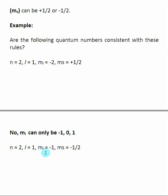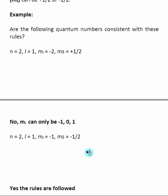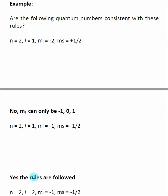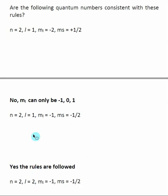The m sub L values are determined by L. With L equal to one, the possible m sub L values are minus one, zero, or one. So an m sub L of minus one is correct. And the possible m sub S values are minus one-half or plus one-half. So yes, all the rules are followed for this set of quantum numbers.